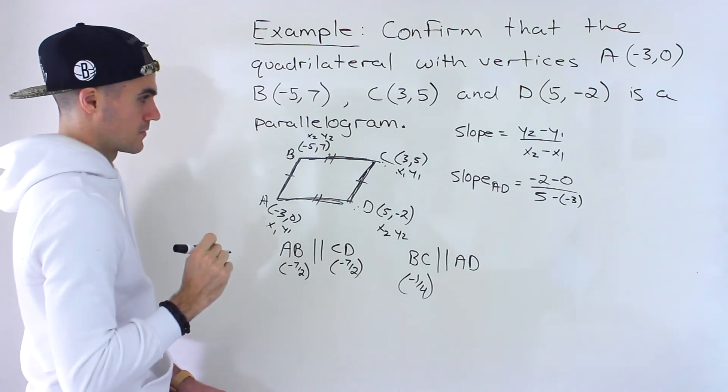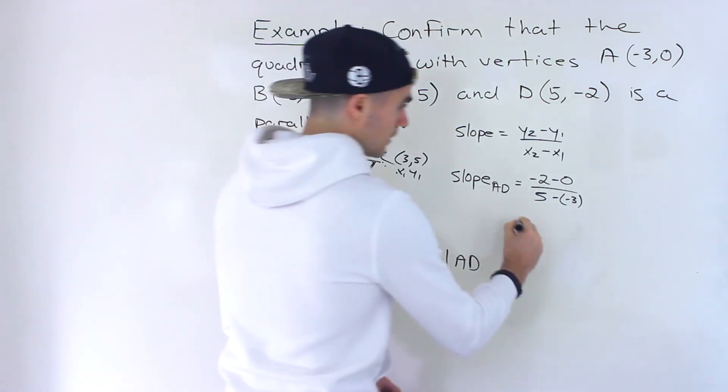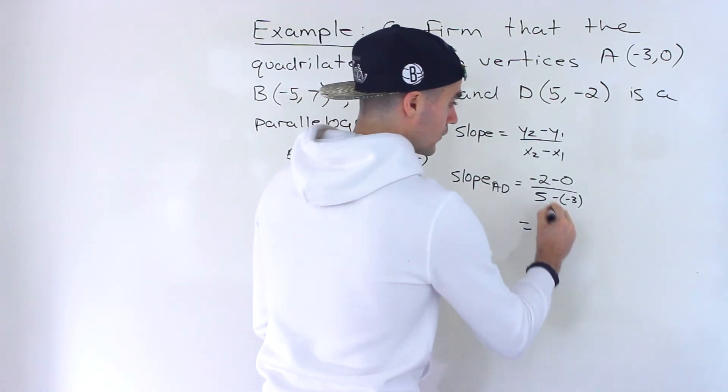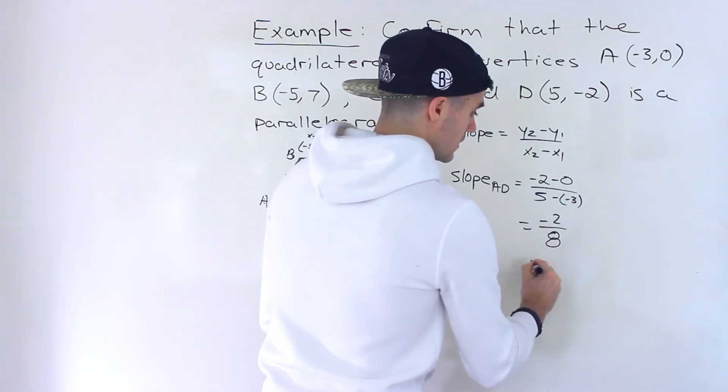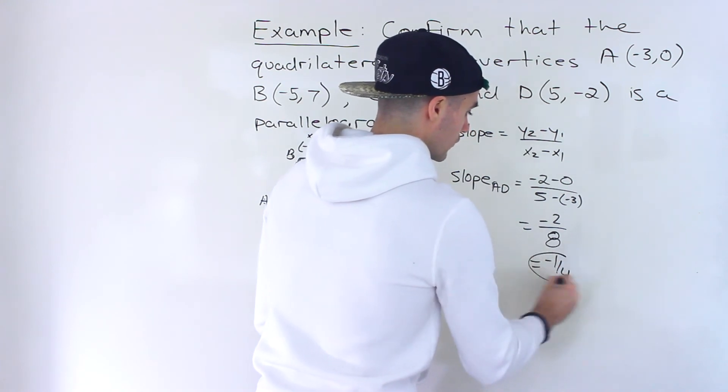Okay, so from here we'd have -2 over 5 minus -3 is the same as 5 plus 3, which gives us 8, which gives us -1/4.